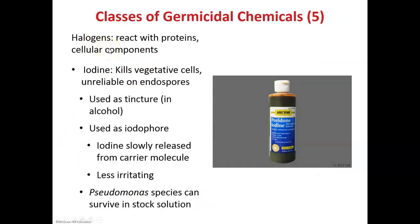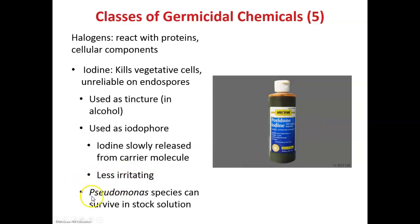Iodine is another form of a halogen. Iodine kills vegetative cells but does not get rid of endospores. It can be used to clean skin before a procedure, but because iodine can be irritating to the skin, it is often mixed with another organic molecule to form an iodophor, which is less irritating. One limitation of iodine is that Pseudomonas species can survive in the solution, and Pseudomonas tends to be a very common hospital-acquired infection because of that.